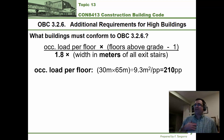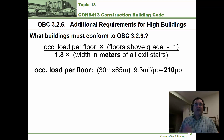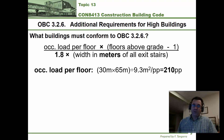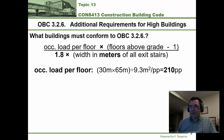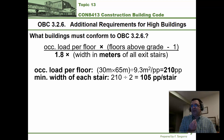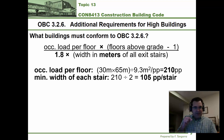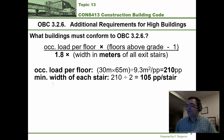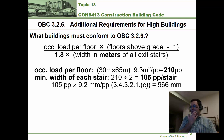To find the occupant load per floor, you multiply the plan area of the floor and divide by the occupant load factor. For a D office occupancy, that factor is 9.3 square meters per person. Doing that calculation gives 210 persons — remember, humans are whole numbers. That's the total expected on any floor at once. Since there are 2 exits, we divide by 2 to get 105 people per exit stair.